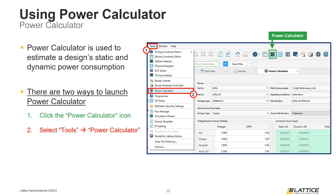Both of these methods work exactly the same and will open the Power Calculator tool in a new window in Radiant. One important thing to remember is that Radiant also includes a Power Calculator standalone tool that can be used to analyze a design's power consumption whenever needed.